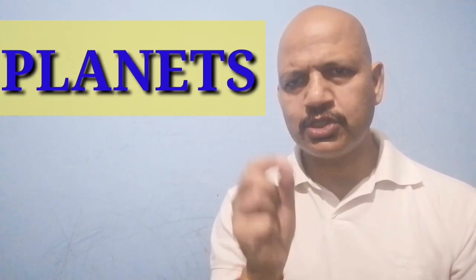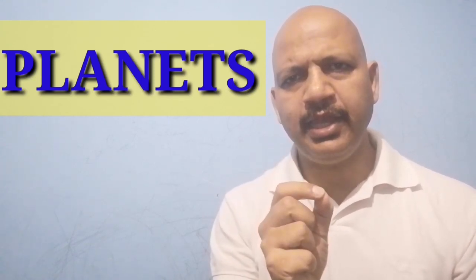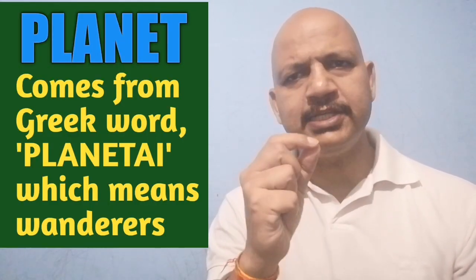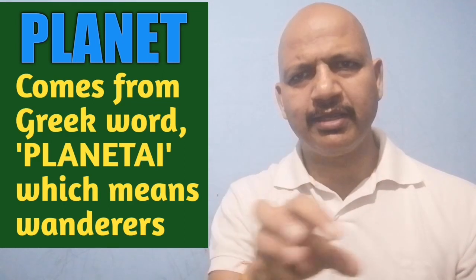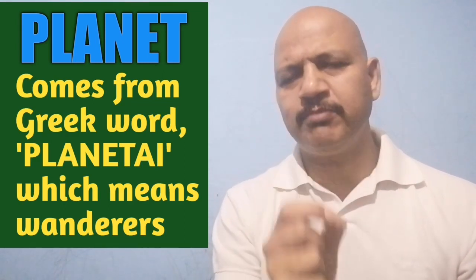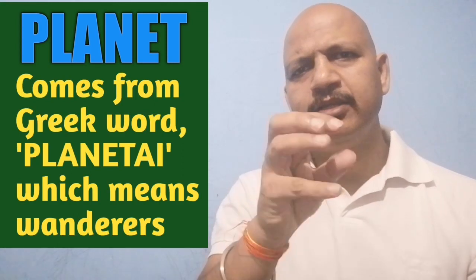Some celestial bodies do not have their own heat or light. These are called planets. The word planet comes from the Greek word planetai which means wanderers - those who keep on moving. The Earth is a planet. And like the Earth there are seven other planets.